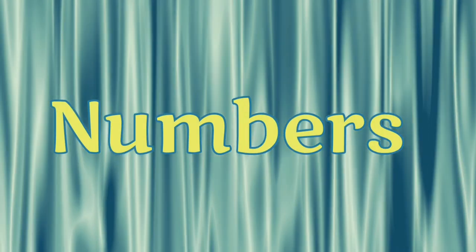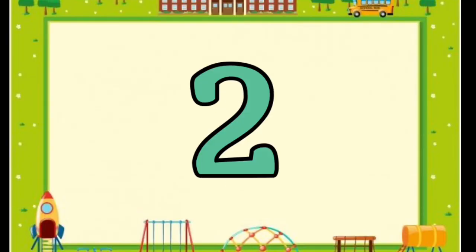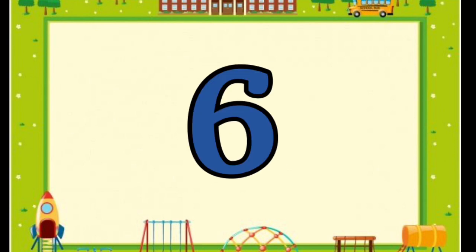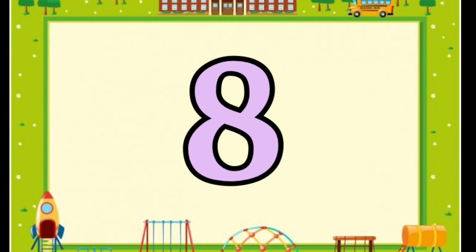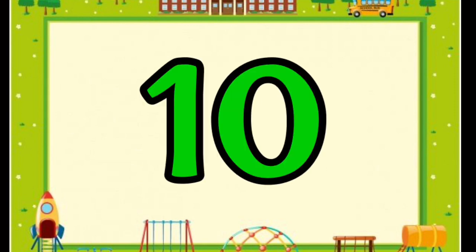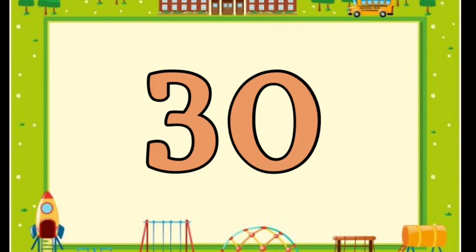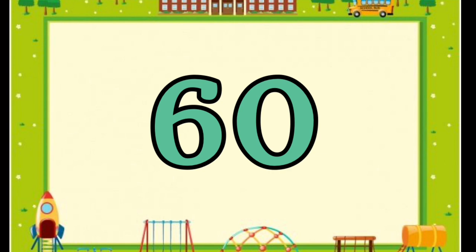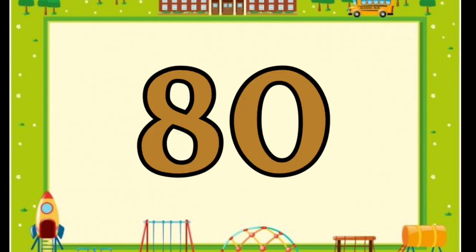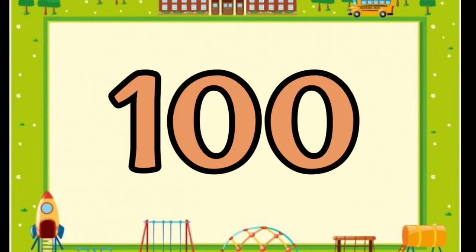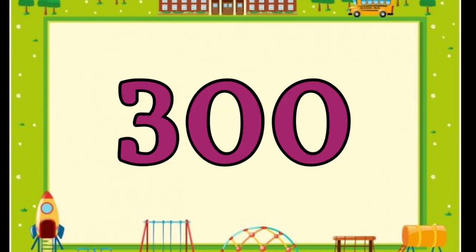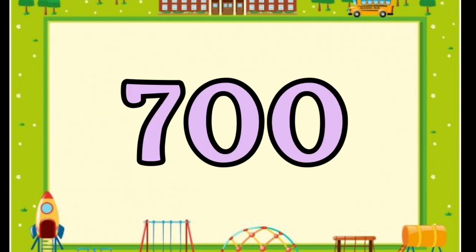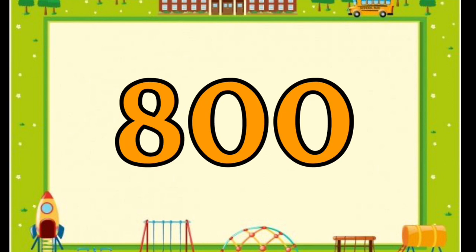Numbers: 1, 2, 3, 4, 5, 6, 7, 8, 9, 10, 20, 30, 40, 50, 60, 70, 80, 90. 100, 200, 300, 400, 500, 600, 700, 800, 900.